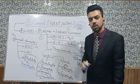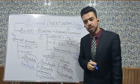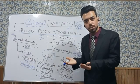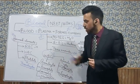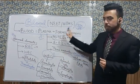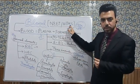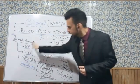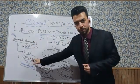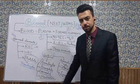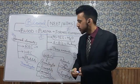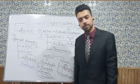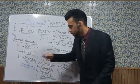Now we move on to the next part — the formed elements, also called blood corpuscles or blood cells. Formed elements comprise 45% of blood. The cells in the blood are of three types: the first is RBC, the next is WBC, and the third is platelets.